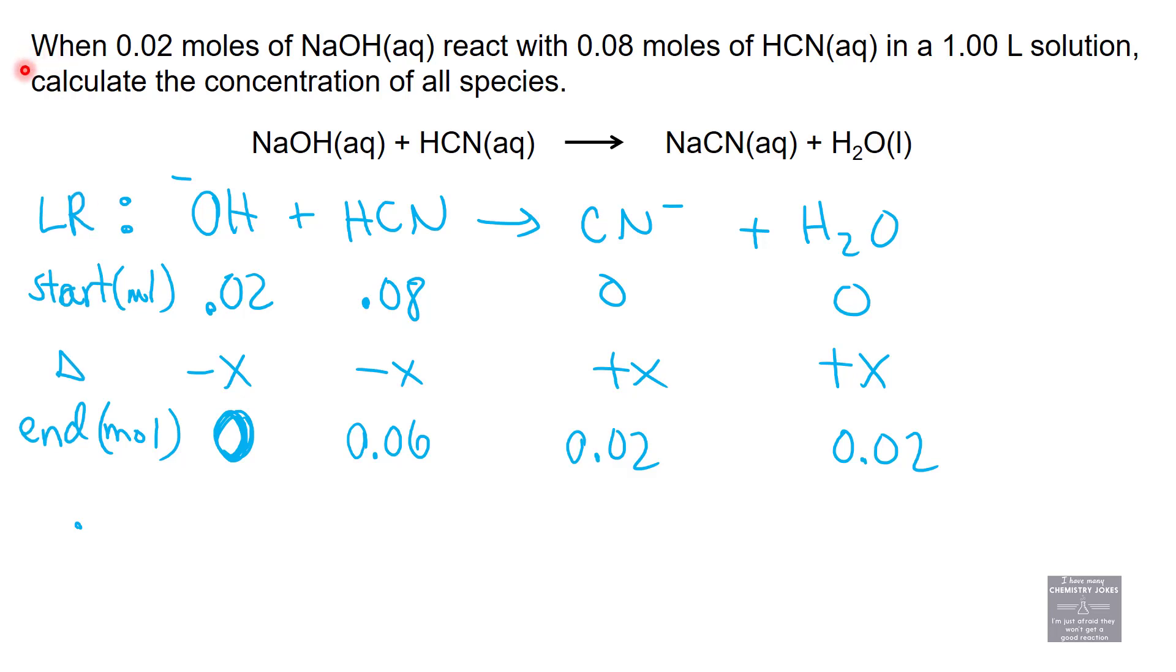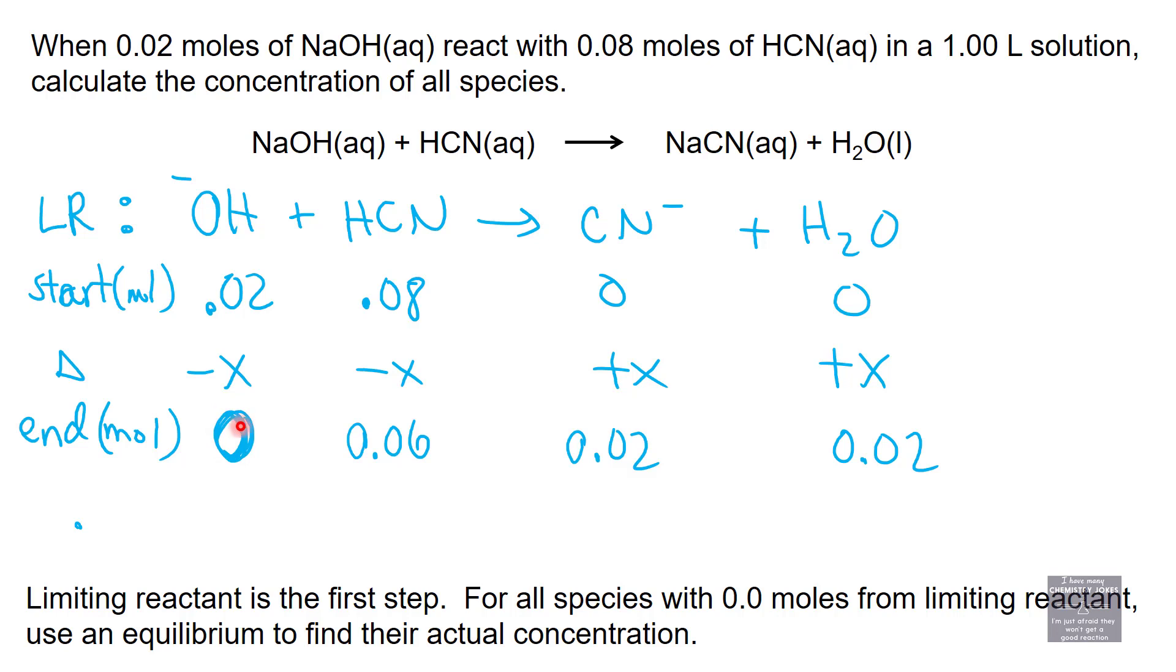We can't ever have something equaling zero at equilibrium. For everything that has 0 moles, use an equilibrium table to find their actual concentration. This time, we're going to take this equation and flip it in reverse. Why? Because this guy is 0, and we need to show some reaction that creates this thing as a product. The hydrolysis of cyanide is going to create hydroxide.